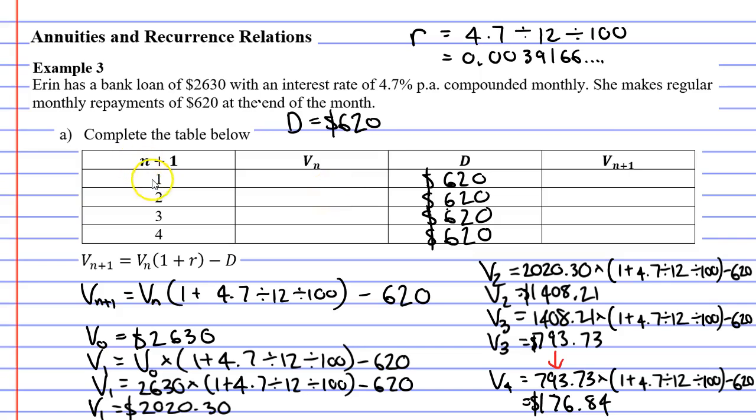What really confuses people is when they have to fill in the V_{n+1} column and the V_n column. So we'll start by looking over here at the left. We're told that n+1 equals 1 for the first row. So if n+1 is 1, when we substitute it into V_{n+1}, we get V_1. And in the next row, V_2 and V_3 and V_4. So the last column actually matches up with the first column, except that we put a V in front of the number.